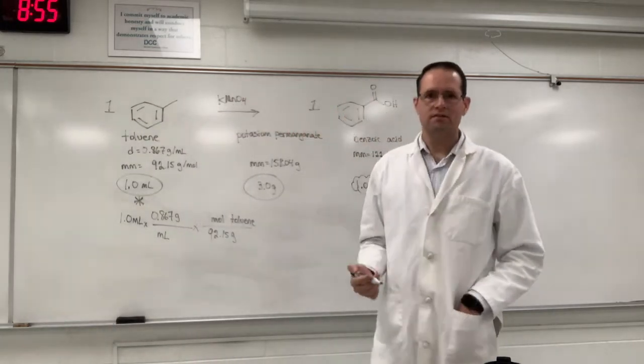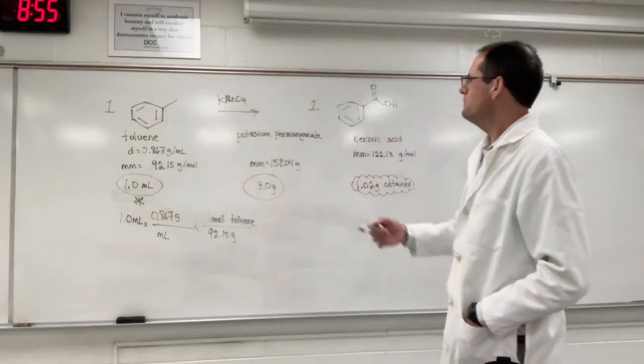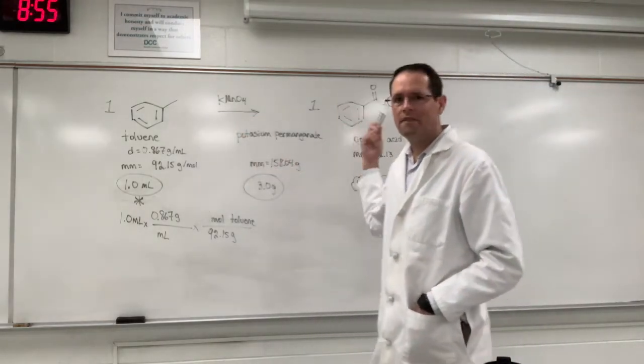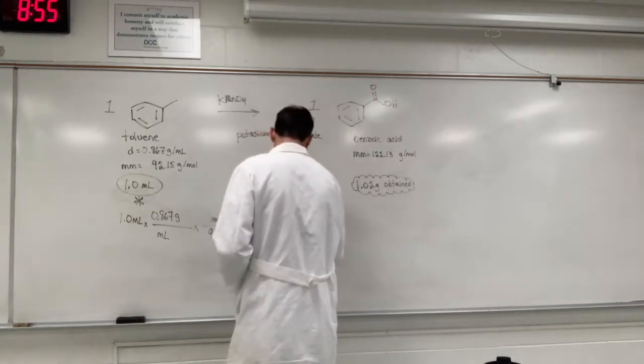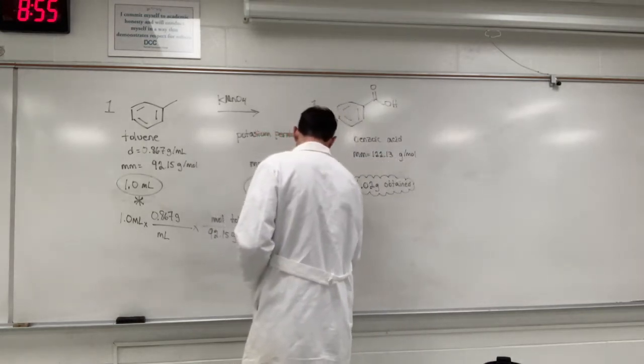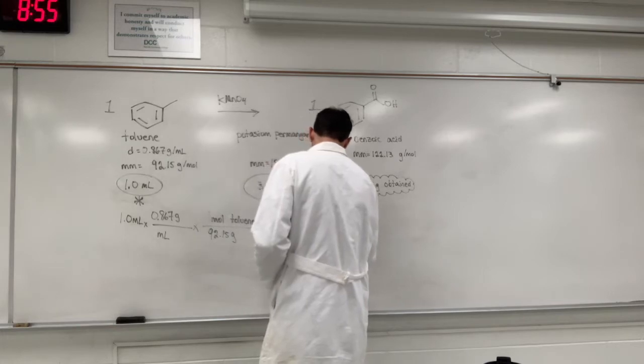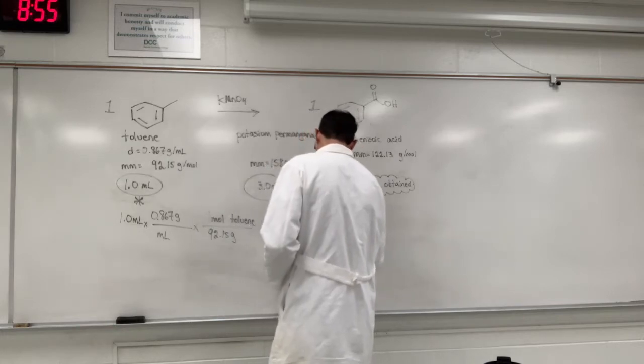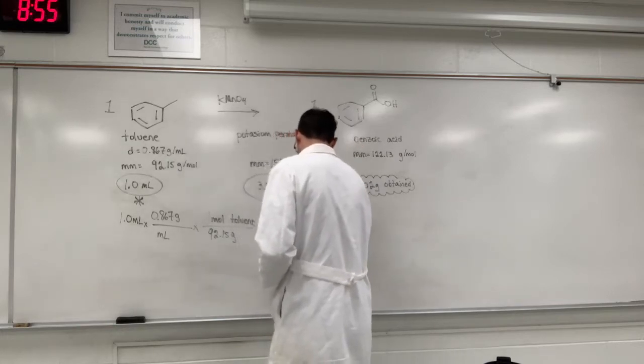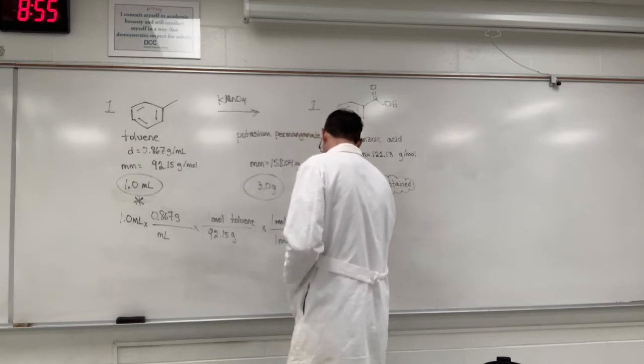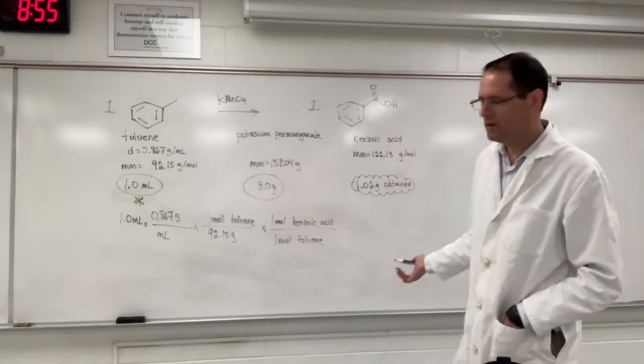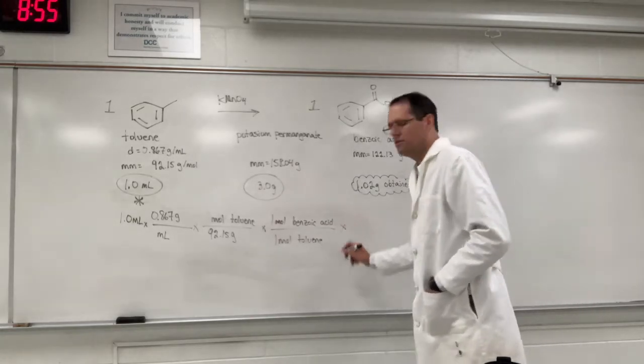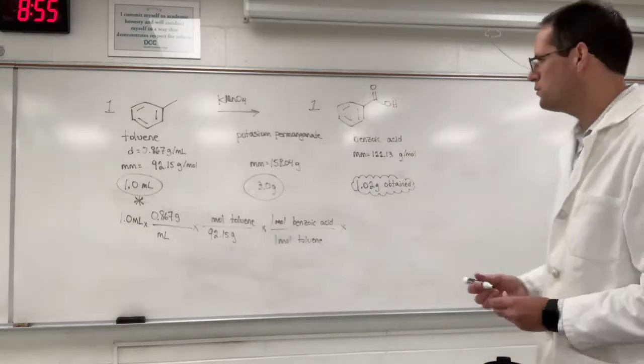Organic chemistry reactions are very simple, most often because you're going from one thing to one thing. So there's going to be one mole of benzoic acid that's going to form for each mole of toluene that you have. Okay, so we're not going to multiply by one and divide by one on our calculator, but the units are there so you can see how this is working.